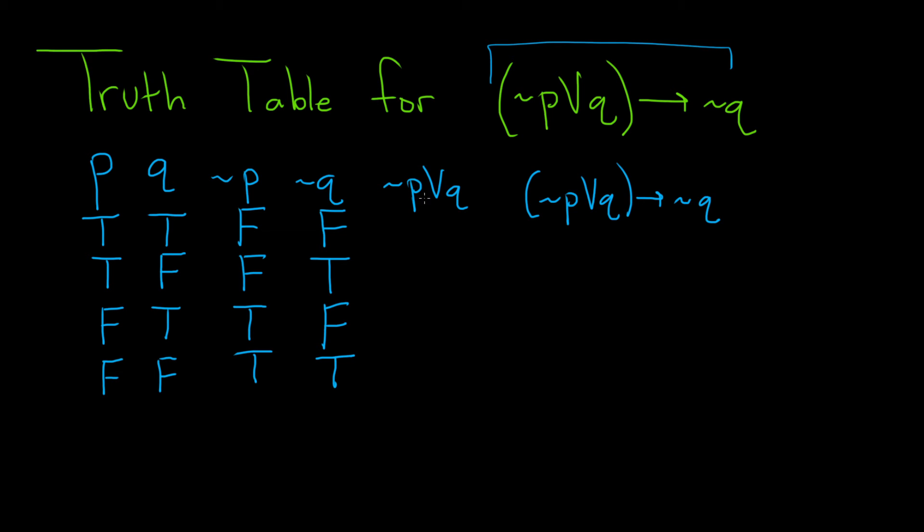And the last piece here, not P or Q. This will be true when at least one of these is true. So we're looking here and here. In this case, the Q is true, so it's true. Here, they're both false. That's the only case where it's false.